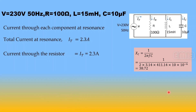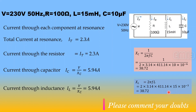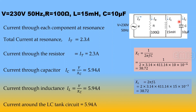At resonance (f0 = 411.14 Hz): XC = 1/(2πf0·C) = 38.72 Ω, so IC = V/XC = 5.94 A. Similarly XL = 2πf0·L = 38.72 Ω, so IL = 5.94 A. At resonance, equal currents circulate through the inductance and capacitance. This configuration is called an LC tank circuit, where the current is sustained by the charging and discharging of the capacitance through the inductance.